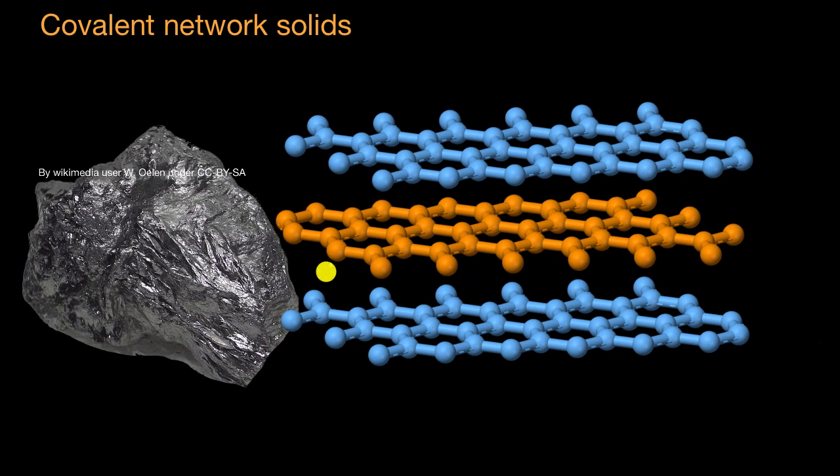Each of these sheets is attracted to each other through intermolecular forces. That's why it's easy to scrape, because these sheets can slide past each other. But if you really wanted to melt graphite, you would have to break these covalent bonds. So you can imagine, to overcome the covalent bonds and melt diamond or graphite takes a very high temperature.